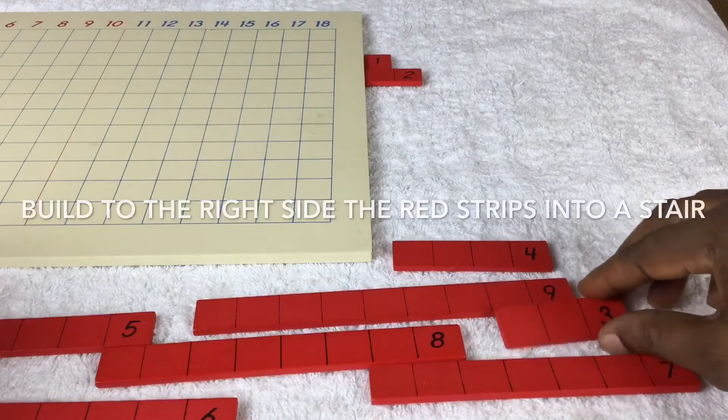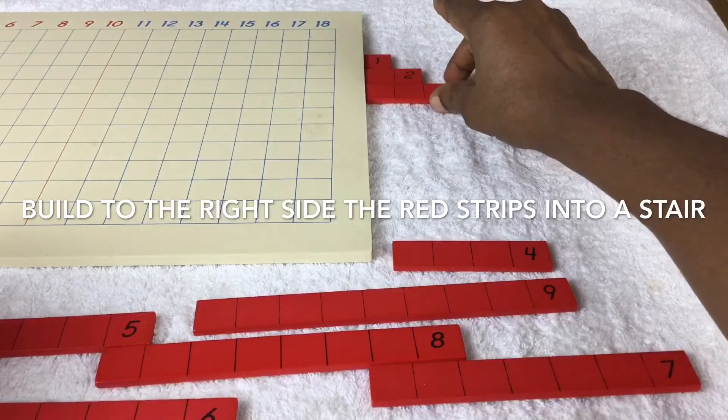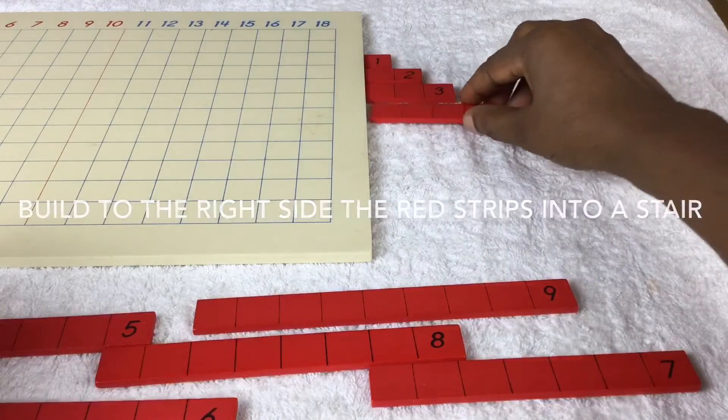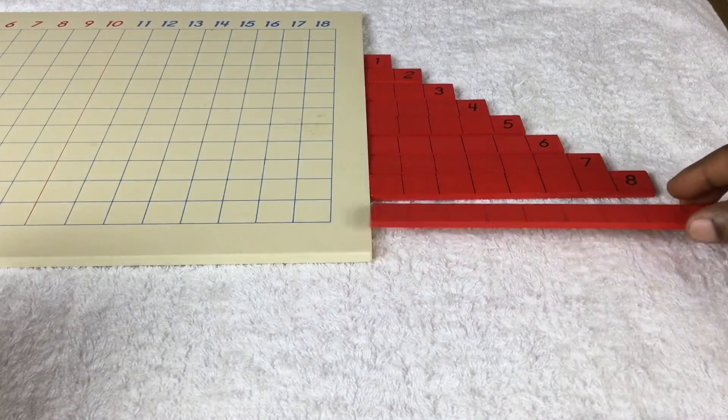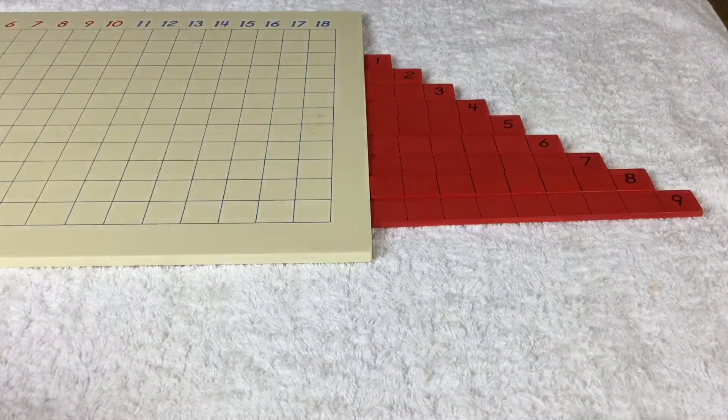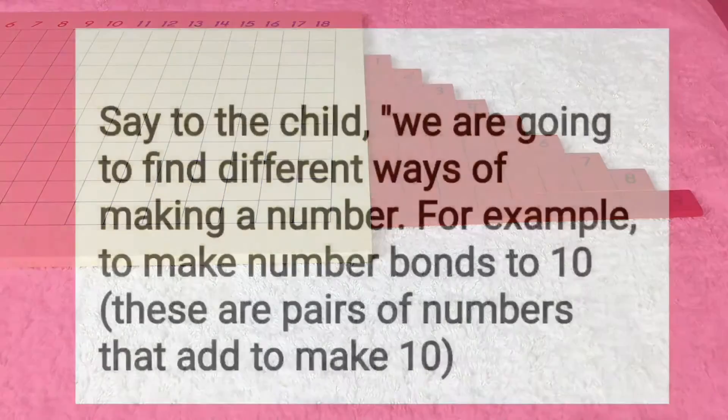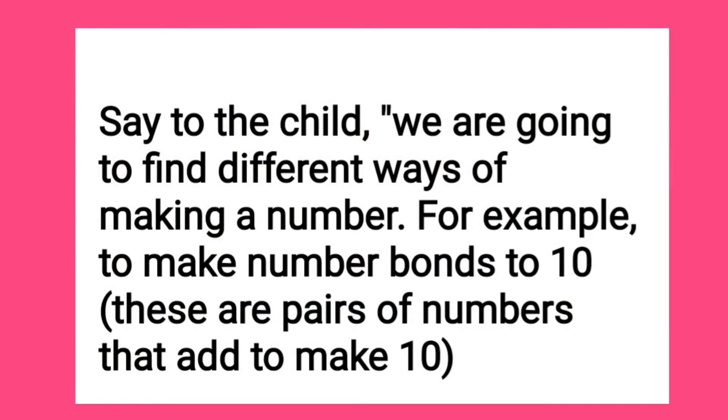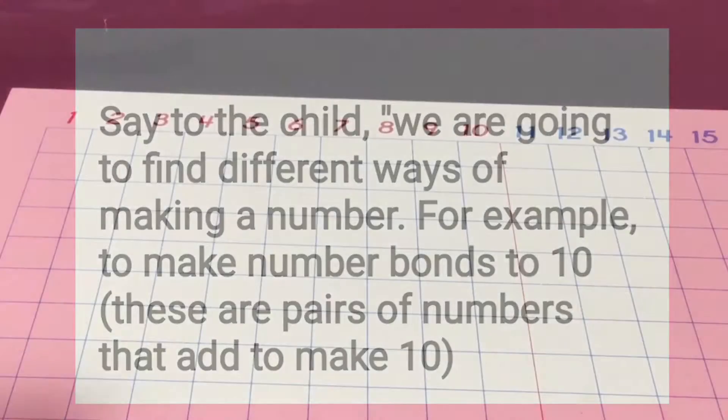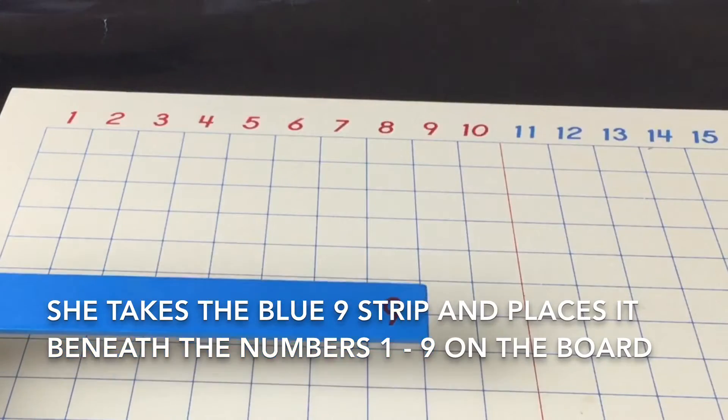Say to the child, we're going to find different ways of making a number. For example, to make number bonds to ten. Number bonds are pairs of numbers that add to make ten.